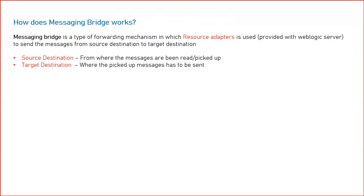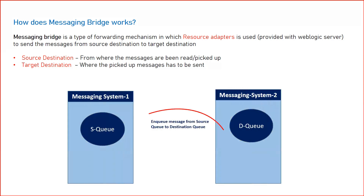The Messaging Bridge is a forwarding mechanism in which a resource adapter is used. When messaging system one talks to messaging system two via a bridge, the physical entity that makes this happen is called the resource adapter. You don't need to worry about it because it is already shipped with WebLogic and is automatically populated when you configure the bridge. The resource adapter is the physical entity that makes the connection between your source and destination messaging systems.